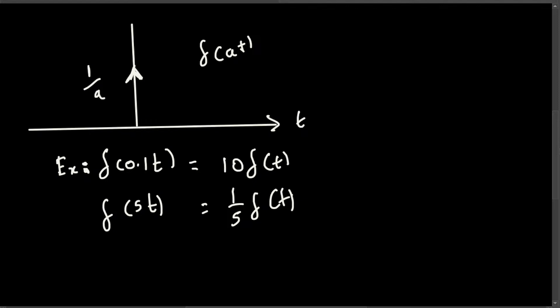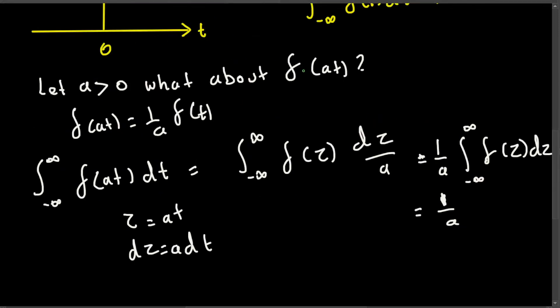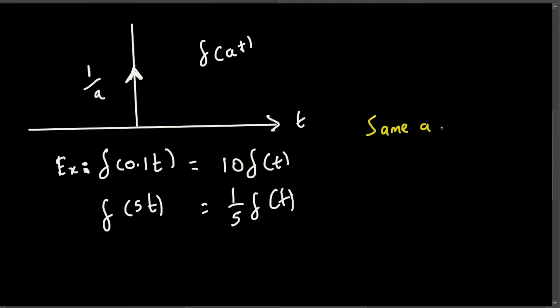You can do the same approach for when a is less than 0. Here we have seen when a is greater than 0. If you take a less than 0, then you're going to get delta of at equals 1 over absolute value of a times delta of t.